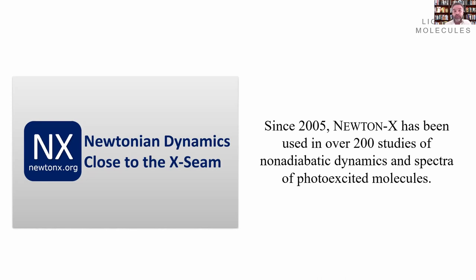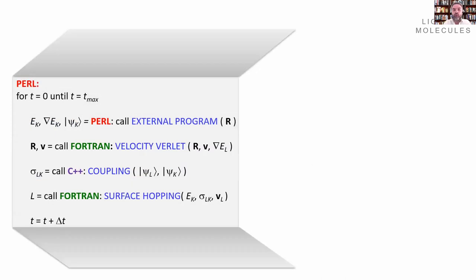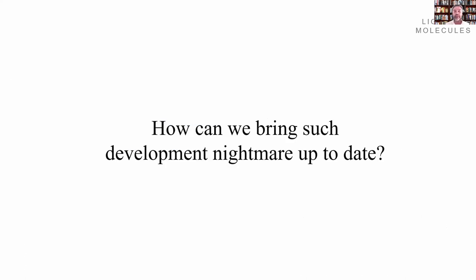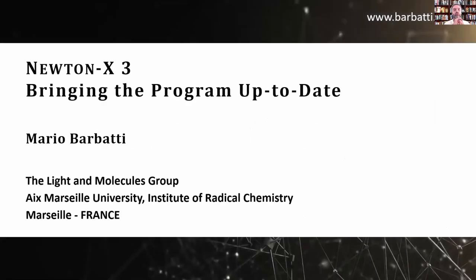However, when you open the box and look at the code, it's a complete mismatch of programming languages, programming styles with excess of IO, convoluted code, no optimized routines, no optimized data format, and very unclear development protocol. It means that you have a development nightmare in your hands. And is it possible to bring it up to date? This is the question I want to bring and discuss with you here in this talk.